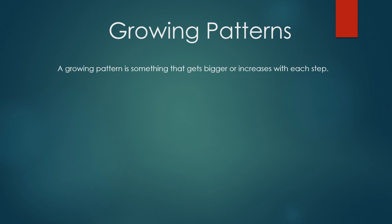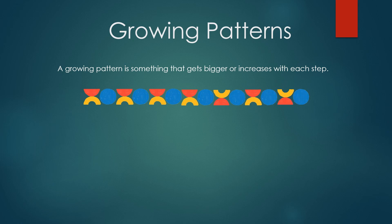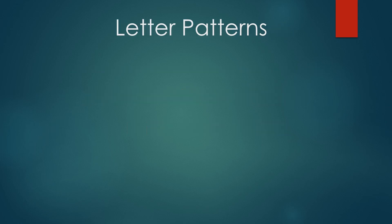Next is growing patterns. A growing pattern is something that gets bigger or increases with each step. Here is the first step — a combination of three different shapes — and you will see that it goes on increasing with each step. Now take a square, then two squares, then three squares, then four squares. What will come next? Five squares. Real life examples of a growing pattern include a staircase or stacking blocks.